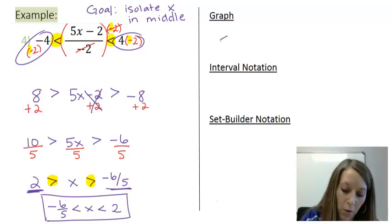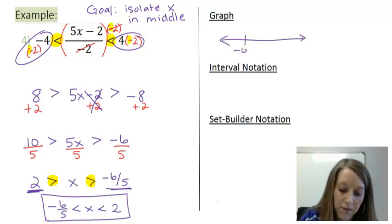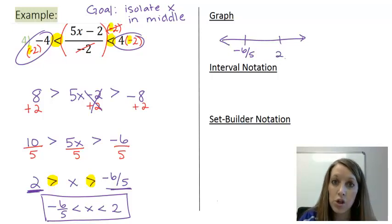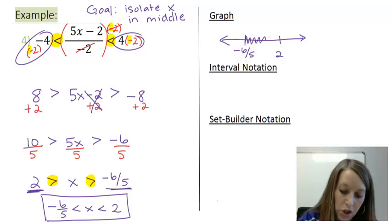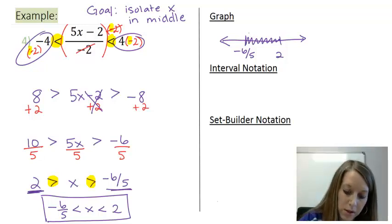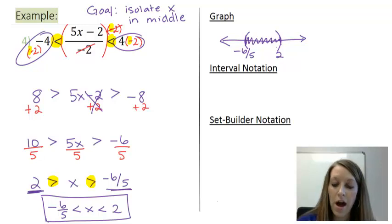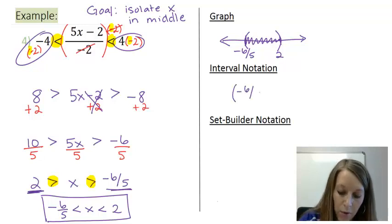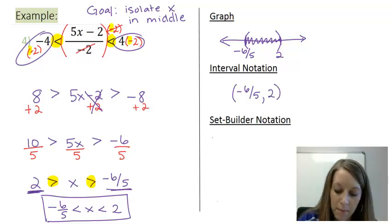So the notations that go with it, first my graph, negative six fifths on the left, positive two on the right should replicate what I have over here in my solution. My x is in between so I shade in between. Neither one of them are or equal to so both of these are parentheses. So there's my graph, my interval notation mimics the graph, parentheses negative six fifths up to two with parentheses, and my set builder notation is the braces such that where I just fill in my blank with these negative six fifths inequality that I have here on the left. Negative six fifths is less than x is less than two.